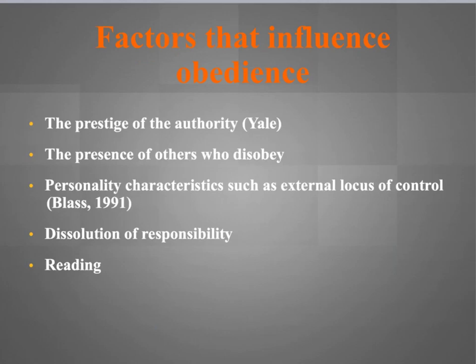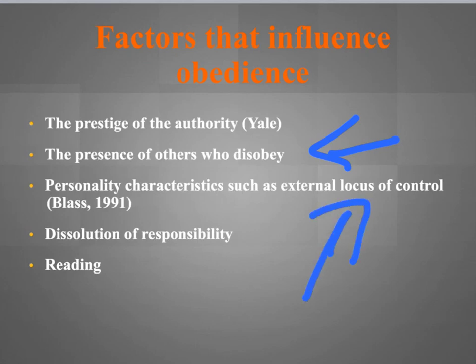Factors that influence obedience include the prestige of authority — such as obeying a police officer or parents and teachers who can impose punishment. The presence of others who disobey can also influence obedience; if someone disobeys and is severely punished, it may scare others into complying. Personality characteristics such as an external locus of control — meaning a low sense of self-control where control is perceived as outside oneself — also play a role. Additionally, diffusion of responsibility, as with de-individuation, leads people to place responsibility for their actions onto the group and feel no remorse.